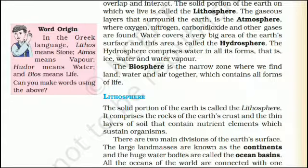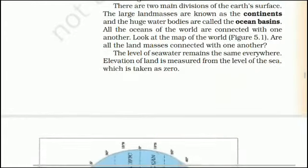Lithosphere: The solid portion of the earth is called the lithosphere. It comprises the rocks of the earth's crust and the thin layers of soil that contain nutrient elements which sustain organisms. There are two main divisions of the earth's surface. The large land masses are known as the continents and the huge water bodies are called the ocean basins. All the oceans of the world are connected with one another. The level of seawater remains the same everywhere. Elevation of land is measured from the level of the sea, which is taken as zero.